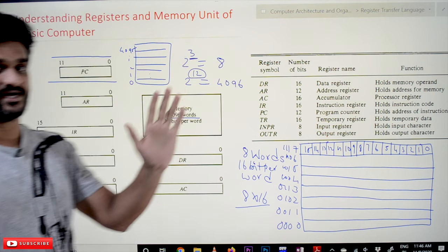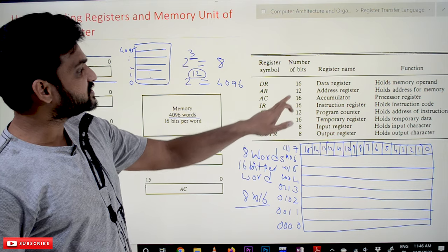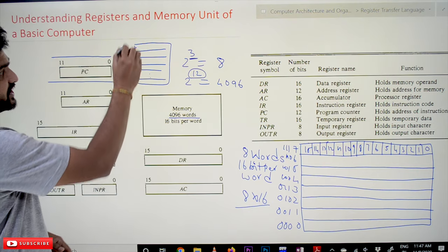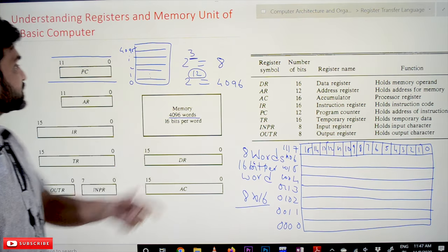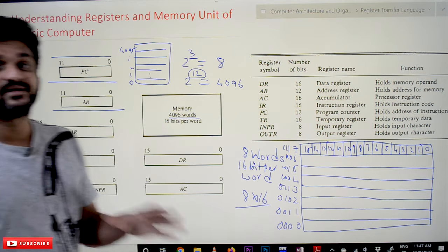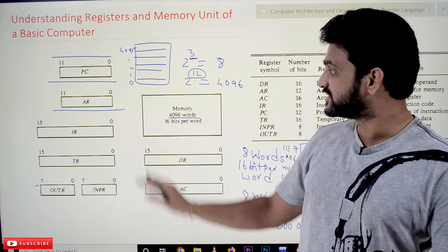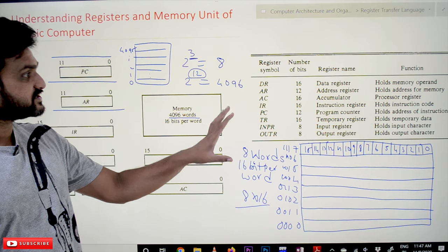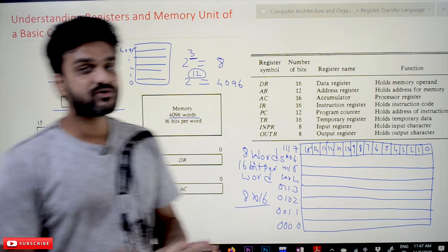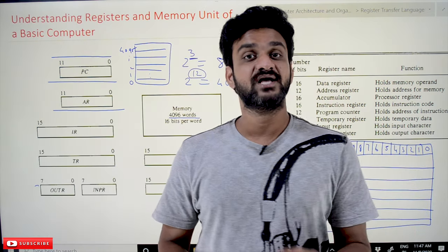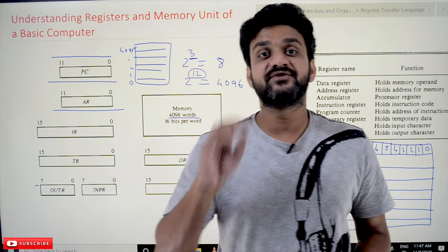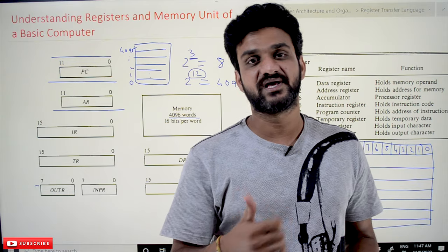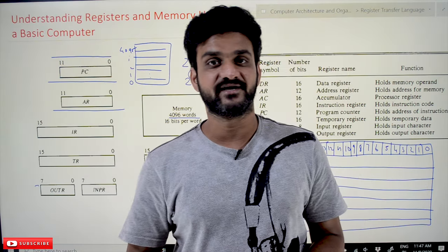This logic is very important to understand. These are the different types of registers and this is how the memory of the basic computer will be. Hope you got the clarity on this concept. Thanks for watching. If you haven't subscribed to our channel, please subscribe and press the bell icon for the latest updates. If you have any doubts regarding this concept, please post your doubt in the comment section below. If you feel that this video is helpful, please give us a like and share this video with your friends so that they will also get benefited. Thanks for watching.